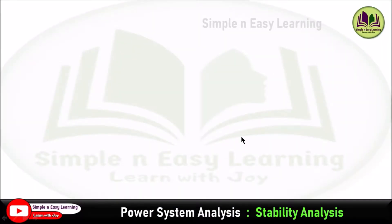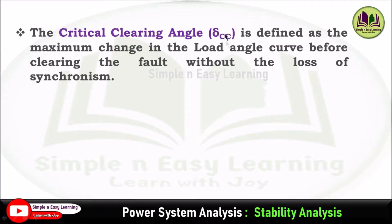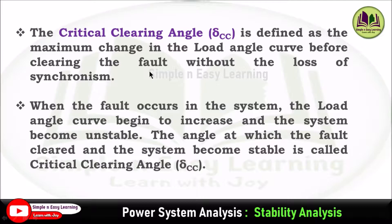In power system analysis, under stability analysis, today we are going to discuss the critical clearing angle. The critical clearing angle, denoted as del_cc, is defined as the maximum change in the load angle or power angle curve before clearing the fault without the loss of synchronism. When the fault occurs, the load angle begins to increase and the system becomes unstable. The angle at which the fault is cleared and the system becomes stable is called the critical clearing angle, denoted as del_cc.